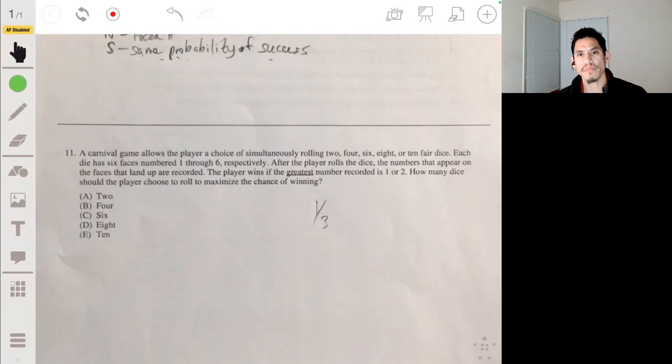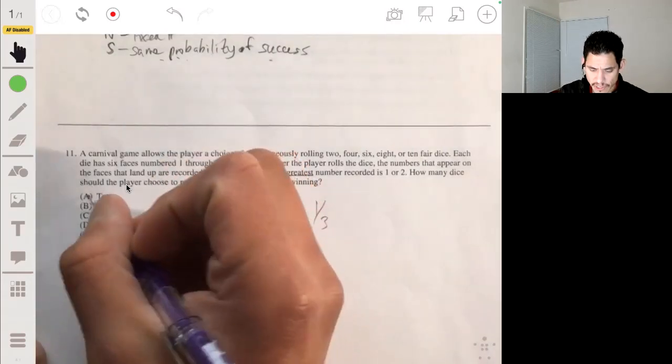Now, this would be a good thing if the probability was above 50%, but since this is like a 1 third chance, you want to basically just, it doesn't, it's not going to help throw more dice. You actually want to have as least dice as possible. So the answer would just be A.